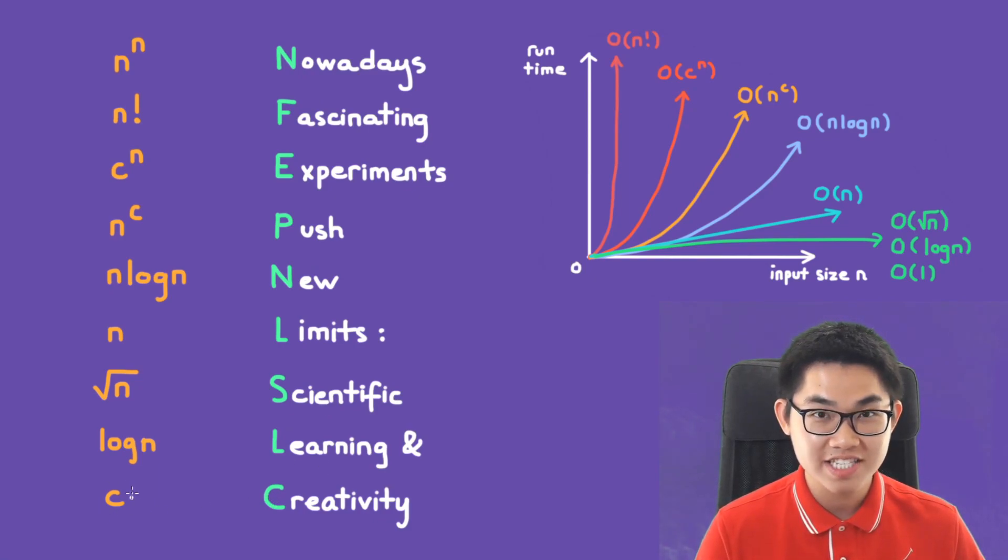So the C stands for constant. The L stands for logarithmic. The S is for square root. The L is for linear functions. This N is for N log N. The P is for polynomial, such as N³, N⁴. And this E is for exponential, such as 2^N.